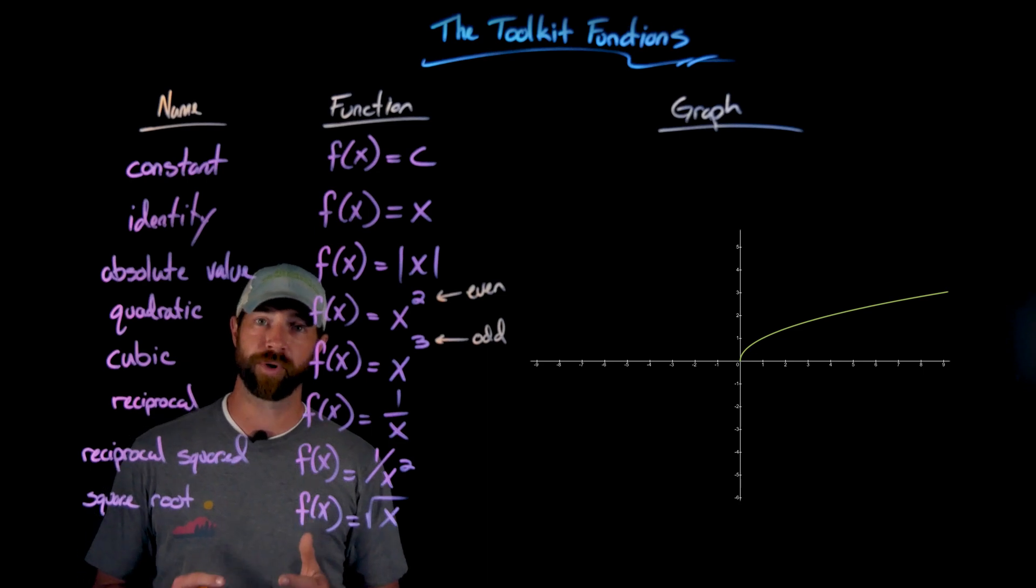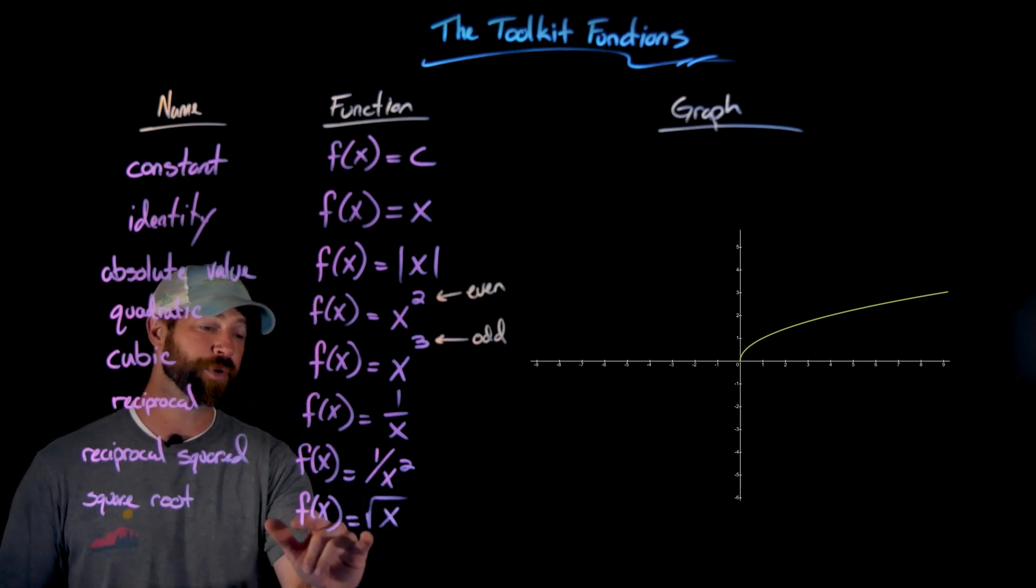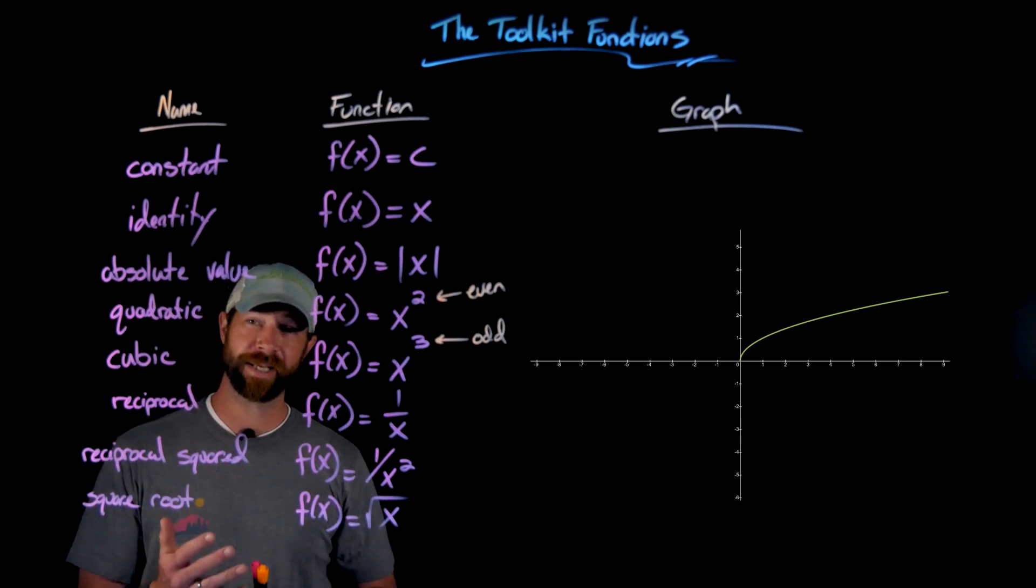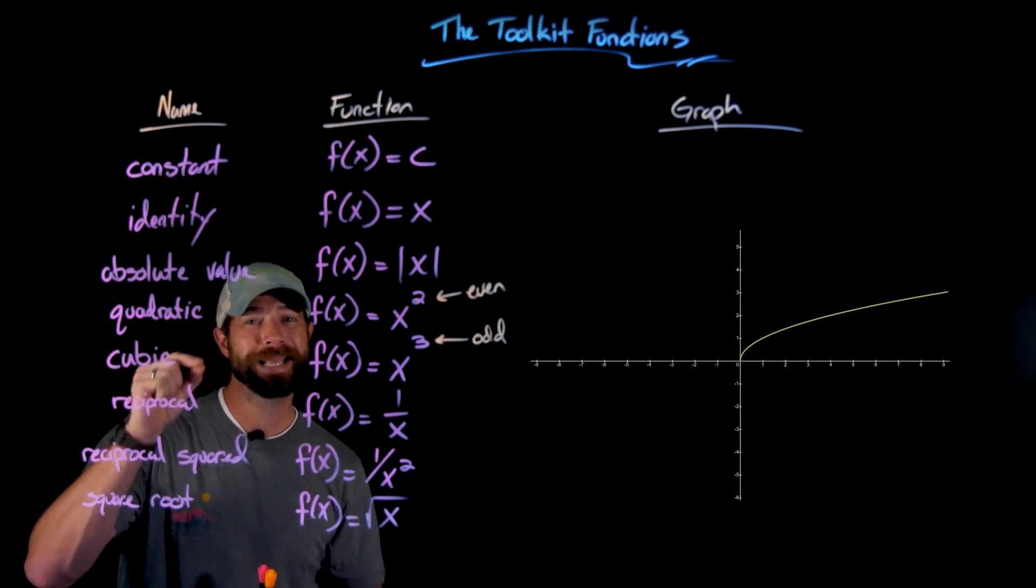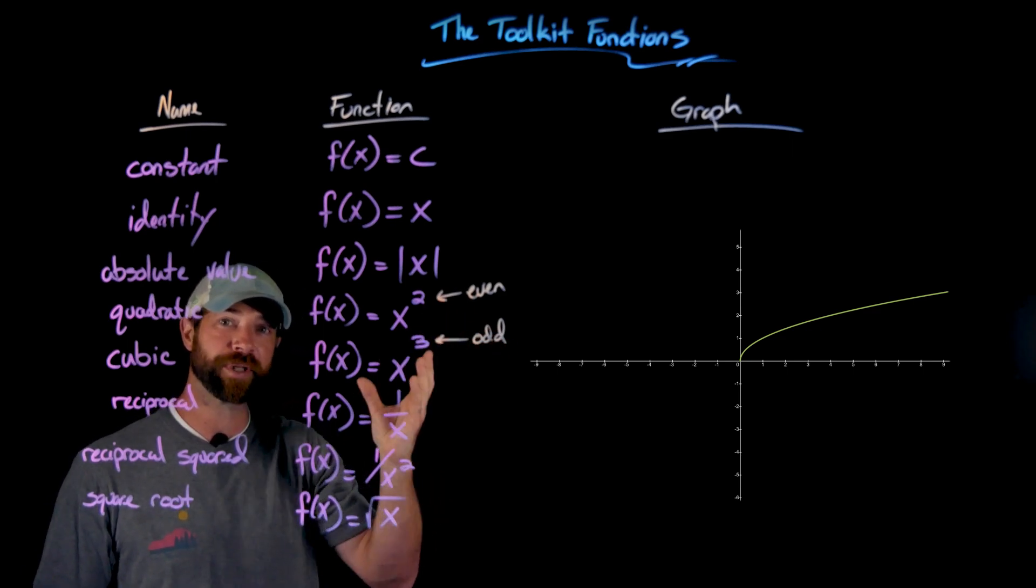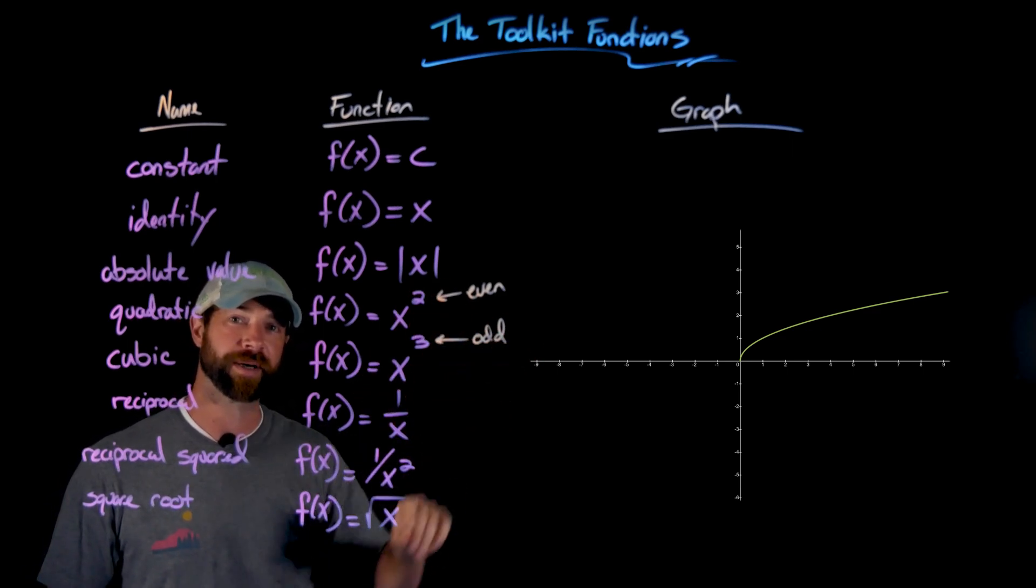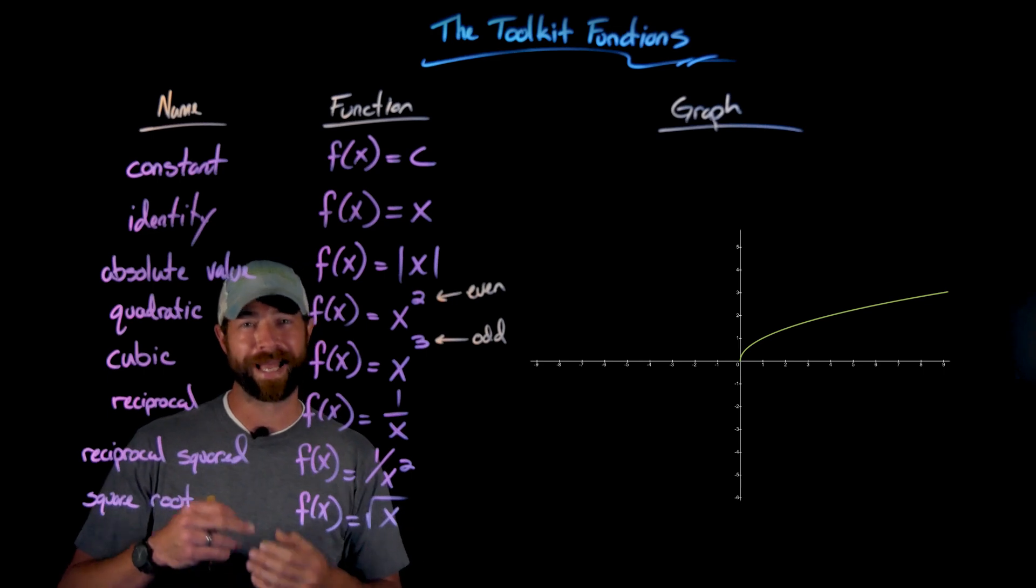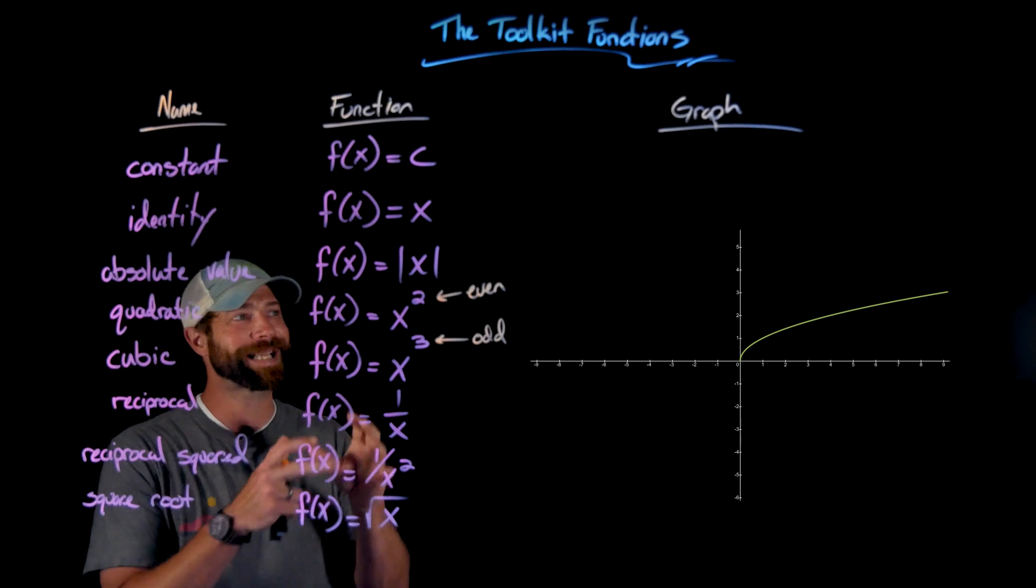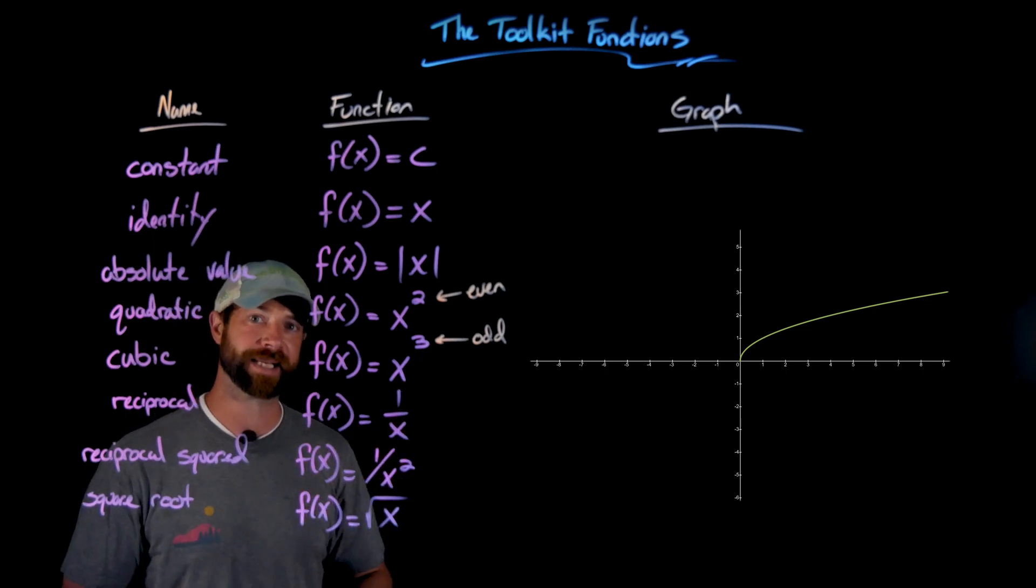Important to note, and we'll see more of this later, is that this square root function, importantly the graphical representation, is the inverse of a quadratic. Meaning, what we're actually looking at is half of a parabola that's been turned on its side. We'll talk more about that and the reasons for that soon. But when you see this, one good way to think about it is this is half of a parabola laid on its side.